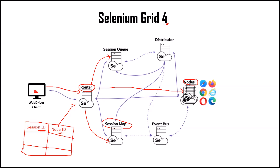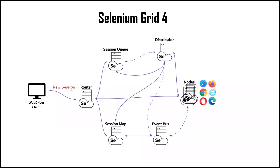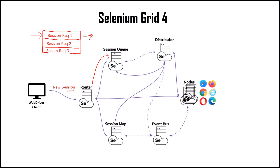When the request is for a new session, the router places the request in the new session queue. This new session queue is a data storage which stores session requests in first in, first out order. Other than new session requests, it also stores configuration parameters like request timeout and request retry interval. If a new session request does not fulfill in the given time, then it throws a timeout exception and removes the session request from the queue.